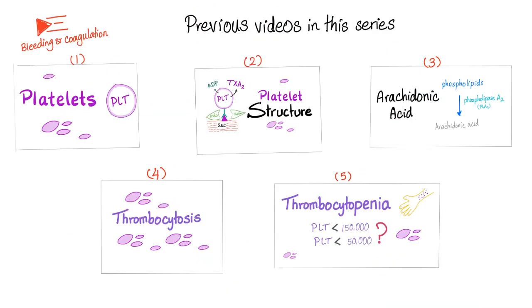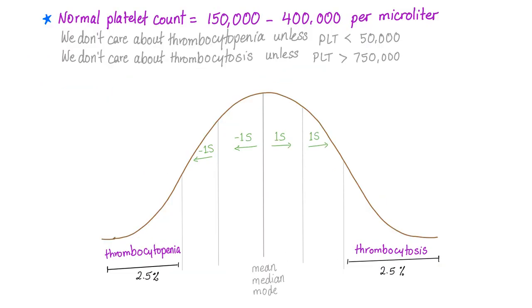Make sure to subscribe and save this playlist. The normal platelet count is between 150,000 to 400,000. Less than that is thrombocytopenia, more than that is thrombocytosis.